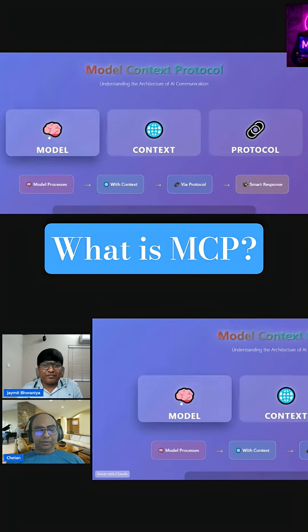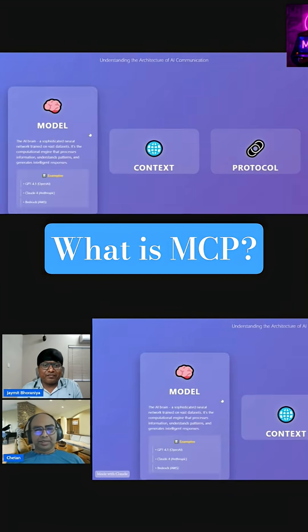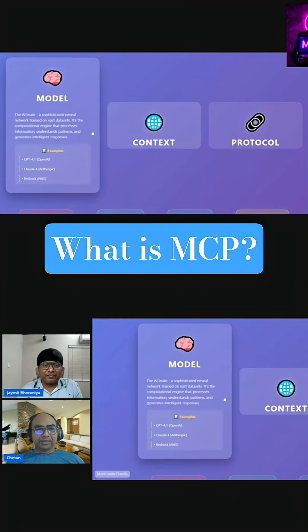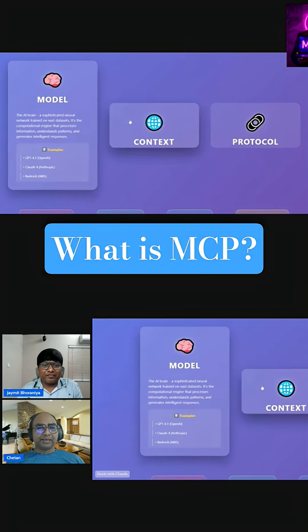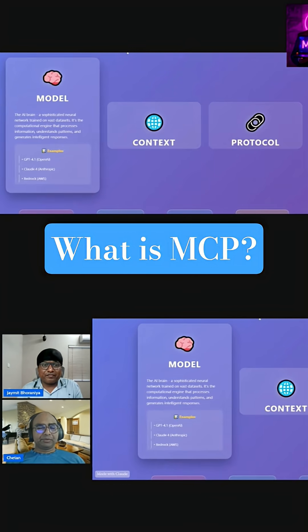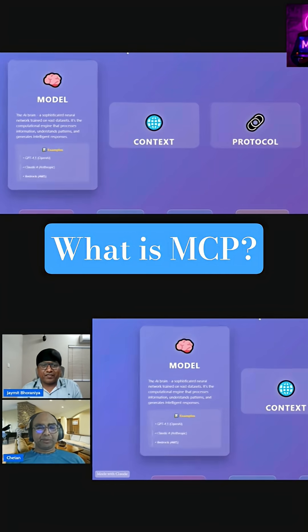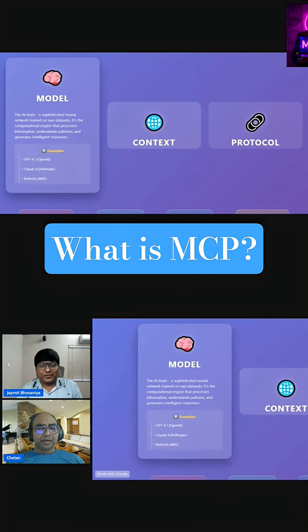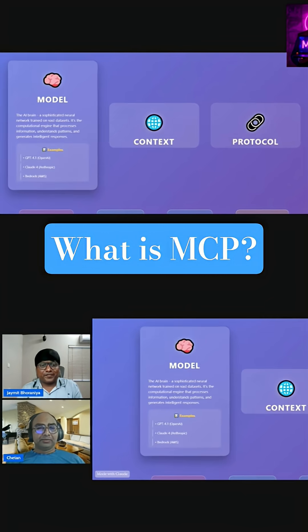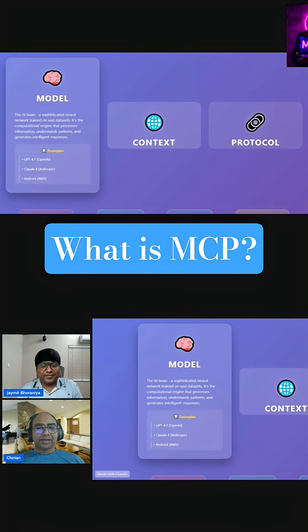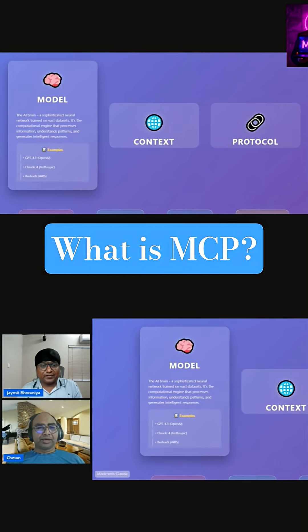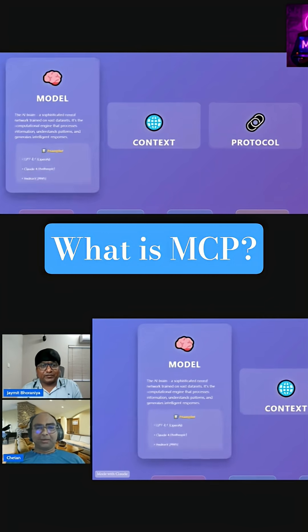We know the model part — since ChatGPT version 3.5 was released, everyone was talking about LLM models which can write text, write a poem, basically predict the next words.